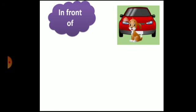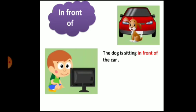The next preposition is 'in front of'. We use 'in front of' when someone or something is ahead of another thing. Where is the dog? The dog is sitting in front of the car. Note that 'in front of' is a combined phrase — you have to write all three words. Where is the boy sitting? The boy is sitting in front of the television. So these are the prepositions.